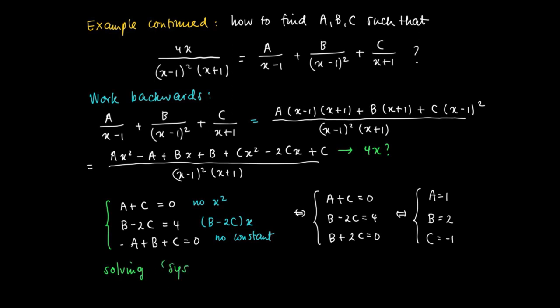And if c equals minus 1, we turn to the first equation, and we see that a should be equal to 1. Well, how to solve such systems of linear equations will be the typical topic of linear algebra in the Math 2 course. But here we succeeded in finding a is 1, b is 2, and c equals minus 1.